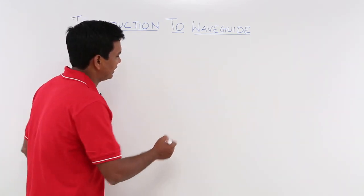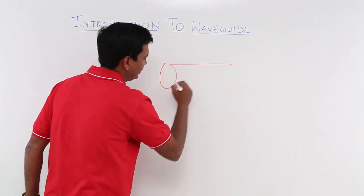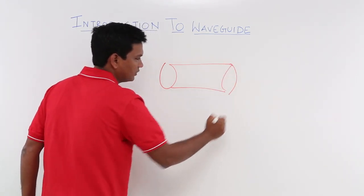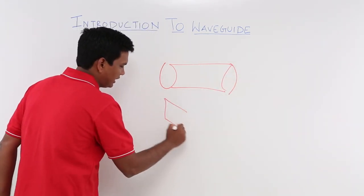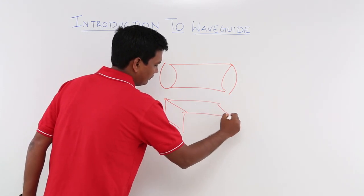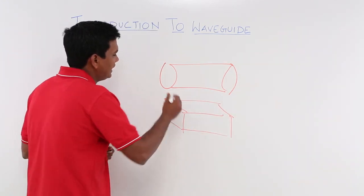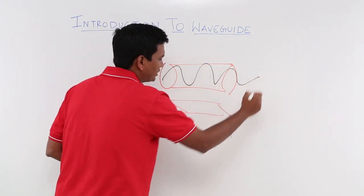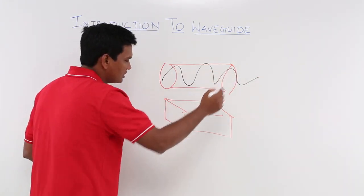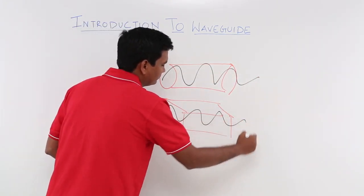Let us understand this with a simple diagram. Let's say I have taken a hollow cylinder or a rectangular structure. What happens is this wave can travel from one point to another point over this hollow cylinder or over this rectangle.